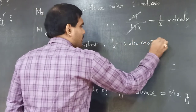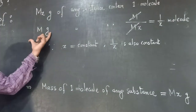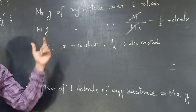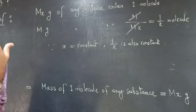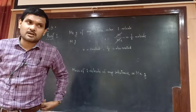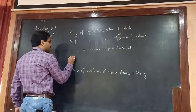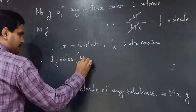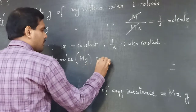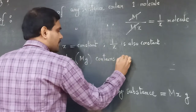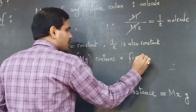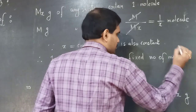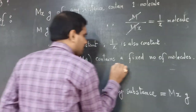So M grams contains 1/x molecules. Since x is constant, 1/x is also constant. M grams means one gram mole. Therefore one gram mole of any substance contains a fixed number of molecules. This is the statement which we have proved.